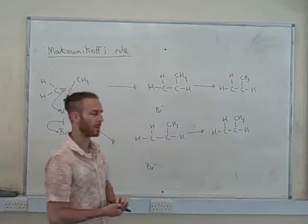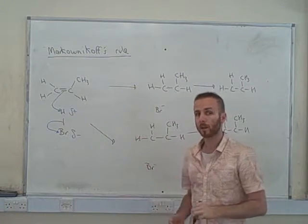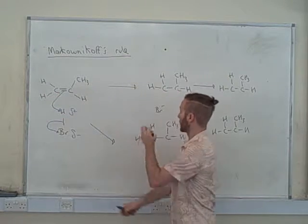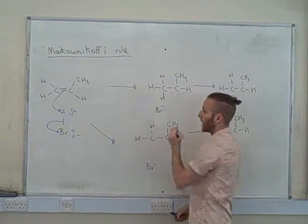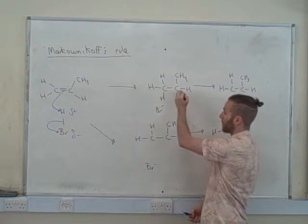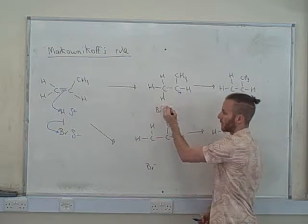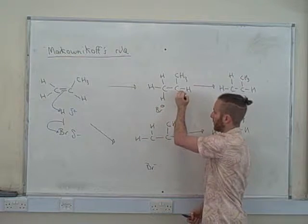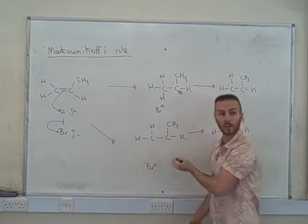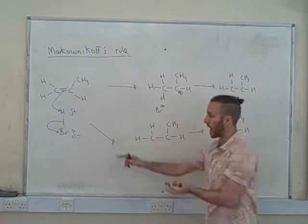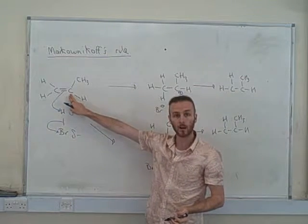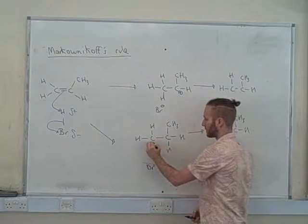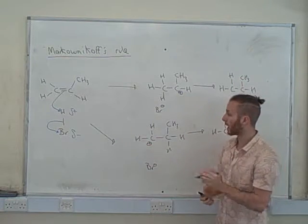And here's where the rule comes in, because we've got two possibilities. Either this carbon could have made the bond with the hydrogen, in which case we'll get that, and this carbon will now have a positive charge. I'm just going to put little circles around my charges. If you go to university, that's what they do anyway, to help distinguish them. Or, my hydrogen could have made a bond with this carbon, and that carbon could have got the positive charge.